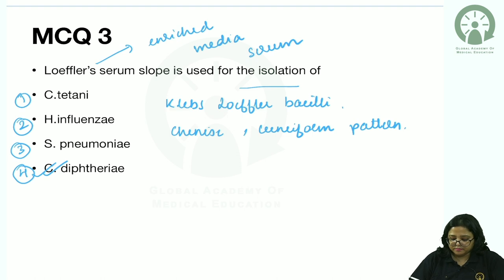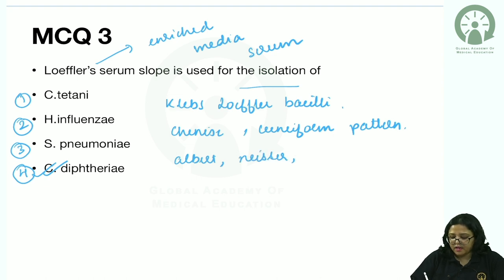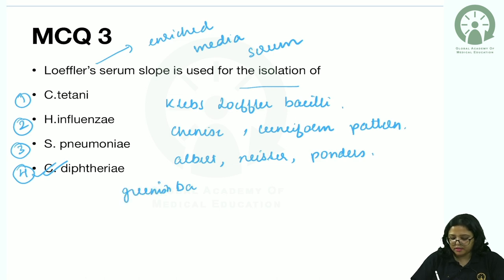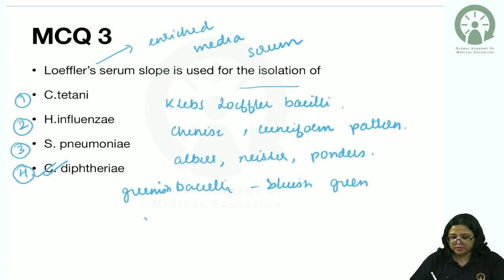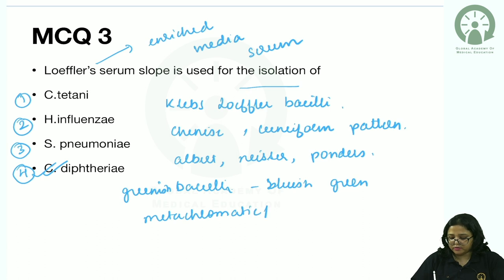Three main stains are used for C. diphtheriae: Albert (most common), Neisser, and Ponder stains. These reveal green bacilli with bluish-green metachromatic granules, also known as volutin granules or Babes-Ernst granules.